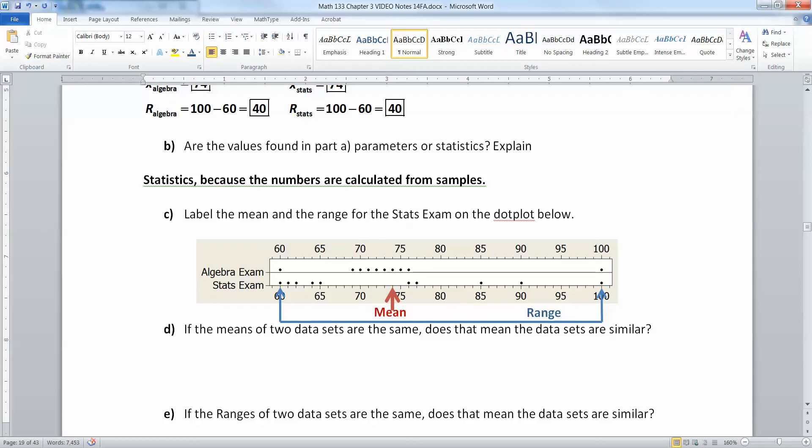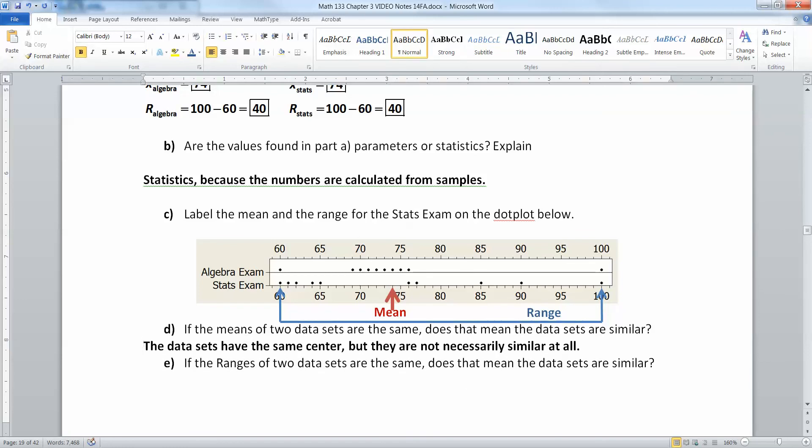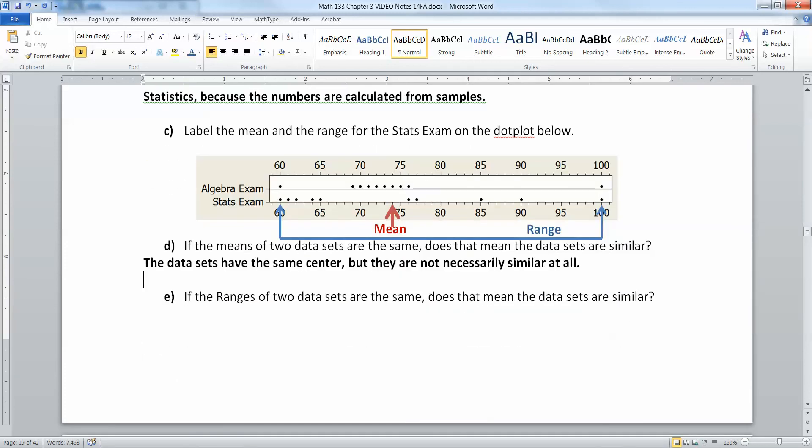If the means of the two data sets are the same, does that mean that the data sets are similar? Yes and no. They have the same center, but they could be very, very different. They're not necessarily similar at all. If you look at these two data sets, the algebra and the stats exam, you can see these data sets are actually quite different from each other. The algebra exam is much more compact. Everybody's getting around that 74. One person's very high, one person's very low. Whereas the stats exam is kind of all over the place. They have the same center of 74, but they do not have the same spread at all.